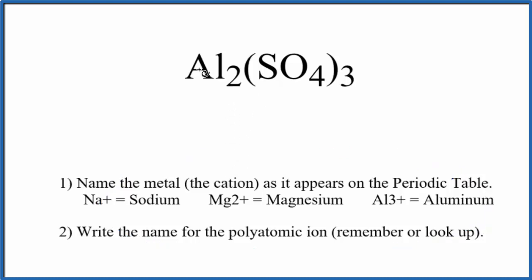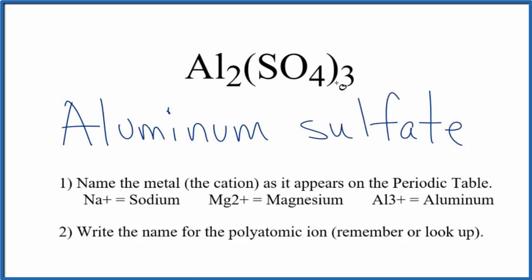First, we name the metal. That's the aluminum. Next, we're going to name the polyatomic ion, the sulfate ion. Good one to remember. Just lowercase s. So the name for Al2(SO4)3 is aluminum sulfate.